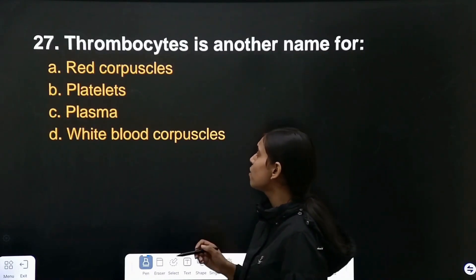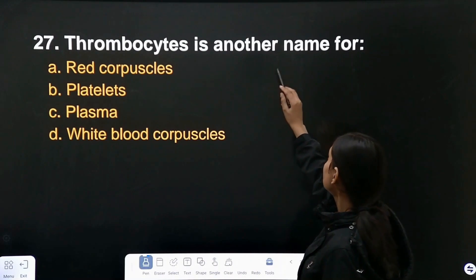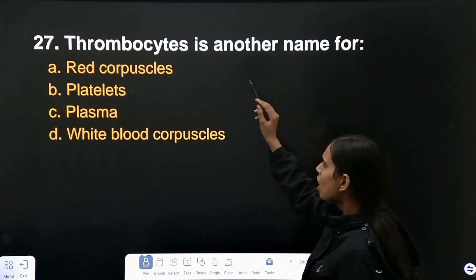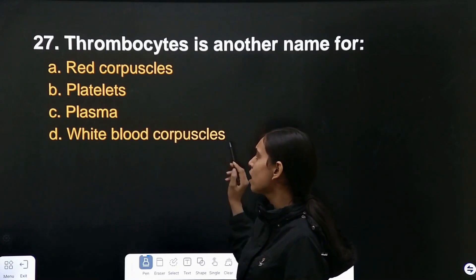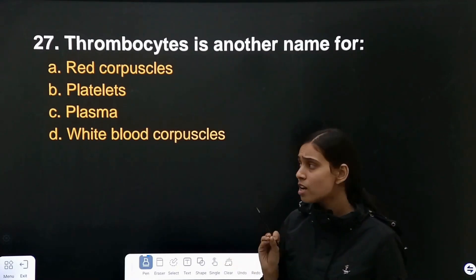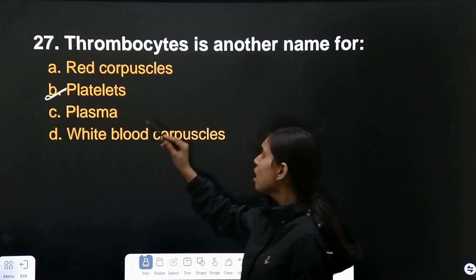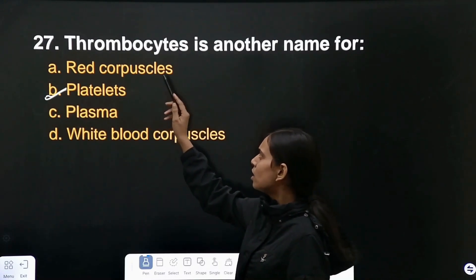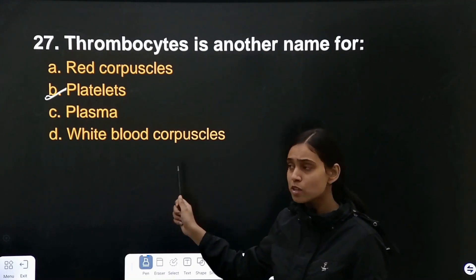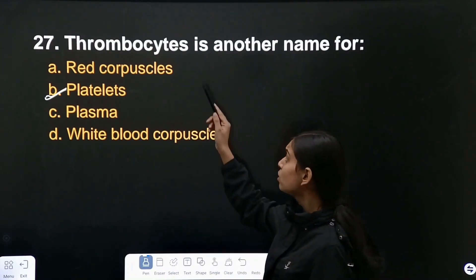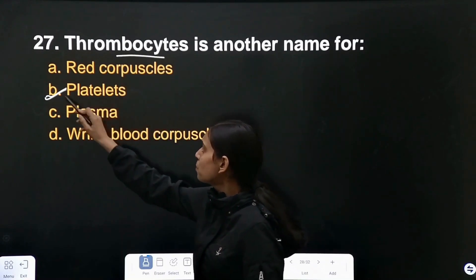Question number 27: thrombocytes is another name for RBC, platelet, plasma, or WBC? The correct answer is platelet. RBCs are called erythrocytes, WBCs are leukocytes, and thrombocytes are platelets.